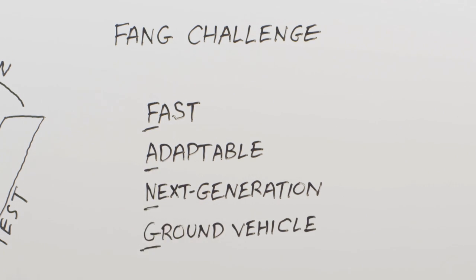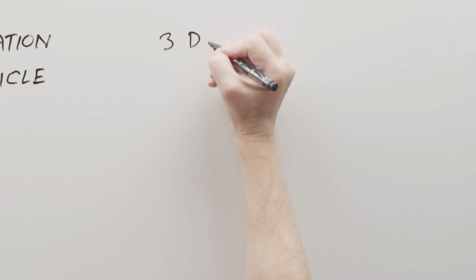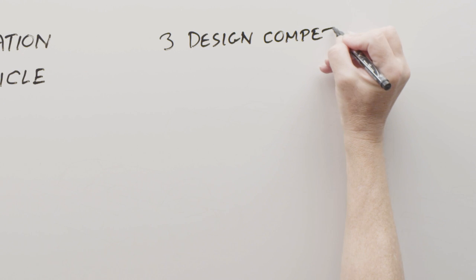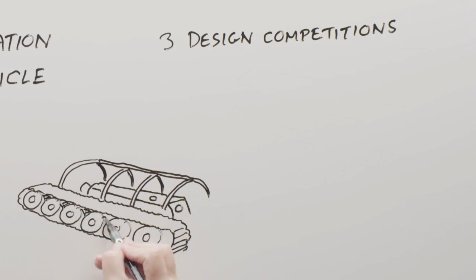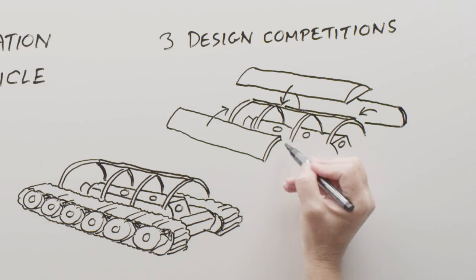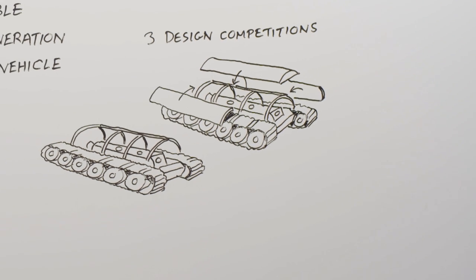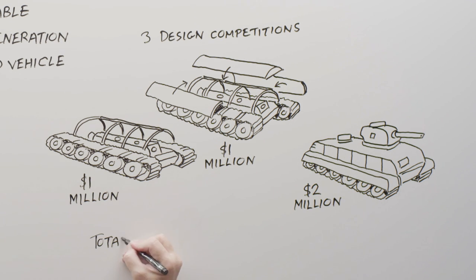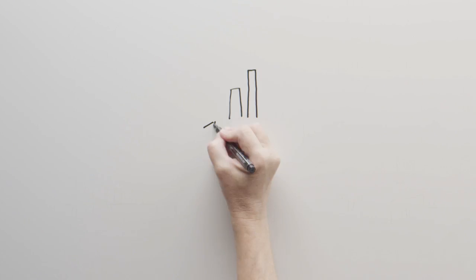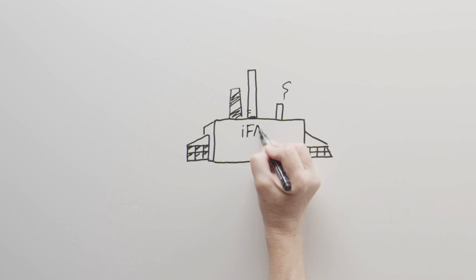The FANG vehicle will be developed via a series of three increasingly complex design competitions. One for mobility and drivetrain, one for chassis and structure, and one for the full vehicle. Each challenge will have a winner, a cash prize, and then the winning design will be built in the foundry.